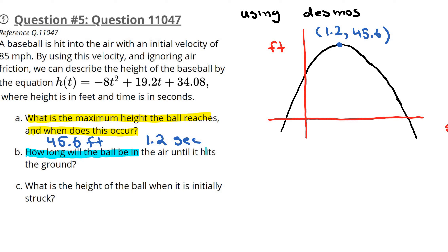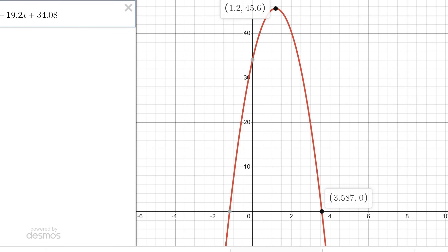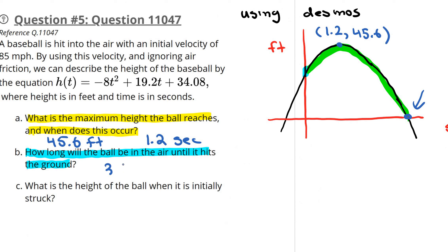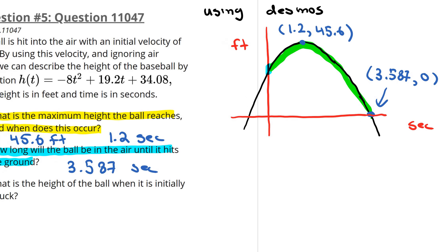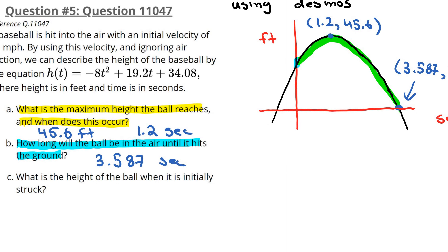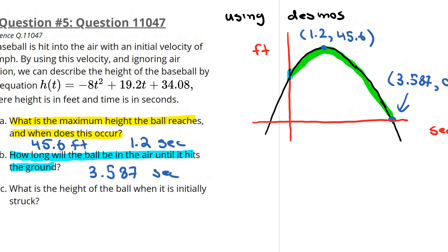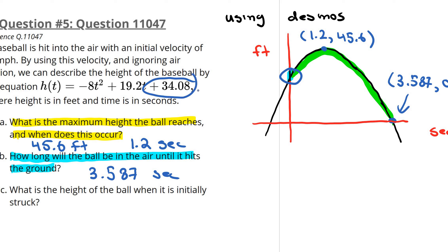Part B: how long will the ball be in the air until it hits the ground? The ball starts here, travels up, then hits the ground at the x-intercept. Using Desmos, the x-intercept is 3.587 seconds — so that's the point (3.587, 0). Finally, the last question: what is the height of the ball when initially struck? That's the y-intercept, which is 34.08 feet.